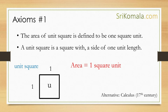Actually, the area of a unit square can be proven using calculus, which was developed by Isaac Newton around the 17th century. On the other hand, the postulation of this axiom was developed in the era of ancient Greece. Thus, the discussion using calculus is for another day.